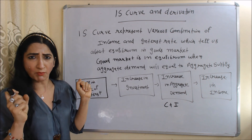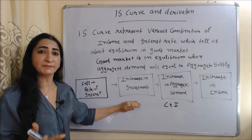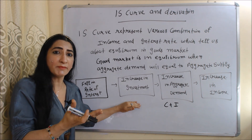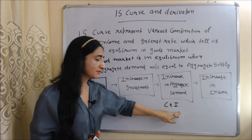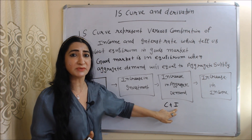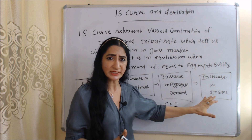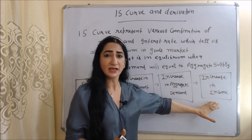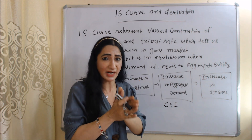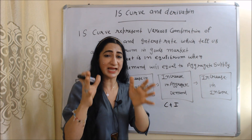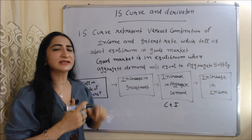As we know, the goods market is in equilibrium when aggregate demand is equal to aggregate supply. Now, suppose interest rate falls — as interest falls, investment will increase, because people can get money from banks at a very low interest rate. As investment increases, aggregate demand will also increase, since aggregate demand consists of both consumption expenditure and investment expenditure. As aggregate demand increases, income also increases, and aggregate supply becomes equal to aggregate demand — meaning the goods market is in equilibrium.